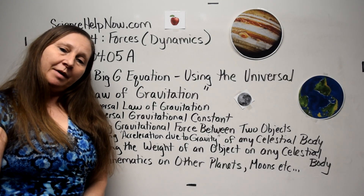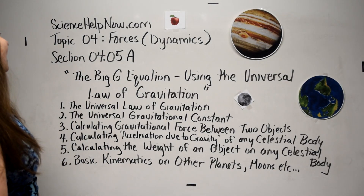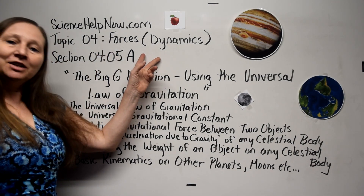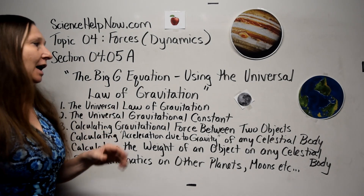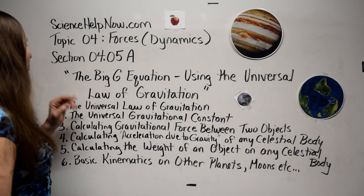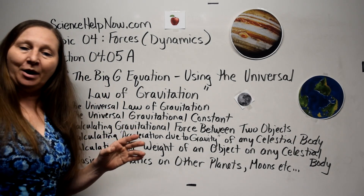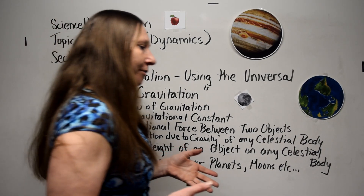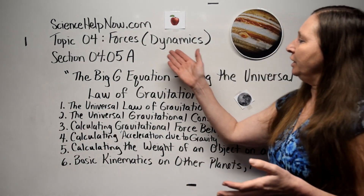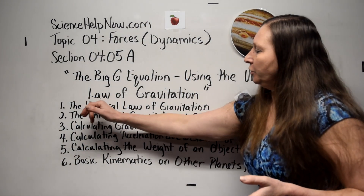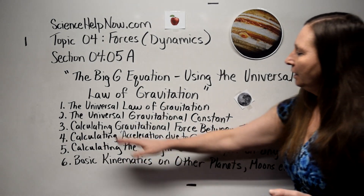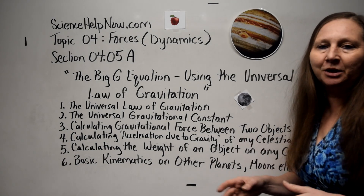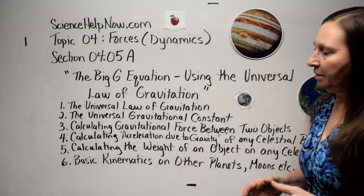This is the first year algebra-based physics course. Topic four is about forces, otherwise known as dynamics. In section 4.5a, we'll be talking about the big G equation using the universal law of gravitation. What we'll cover in section A will be the first three bullets: the universal law of gravitation, the symbols and units, and what the universal law of gravitation means.